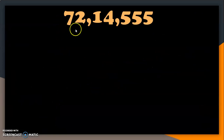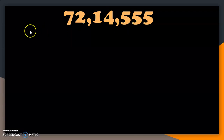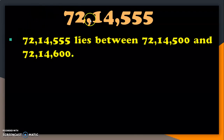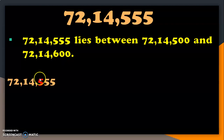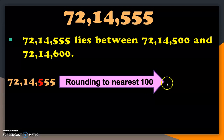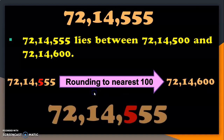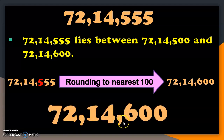One more example: 72,14,555. It lies between the hundreds 72,14,500 and 72,14,600. The target digit in the hundreds place is 5 and the digit after that is also 5, which is at the midway. So we round up to the upper limit — rounding to the nearest hundred gives 72,14,600. By the second method: make the digits after the target digit 0, and since the digit after the target is 5, add 1 to the target digit — the answer is 72,14,600.